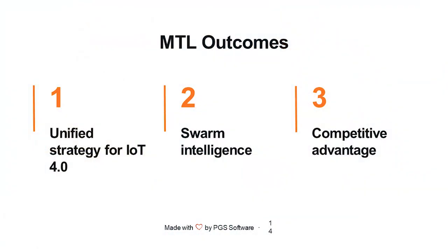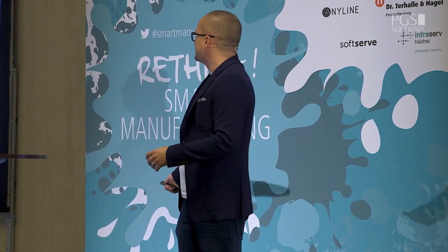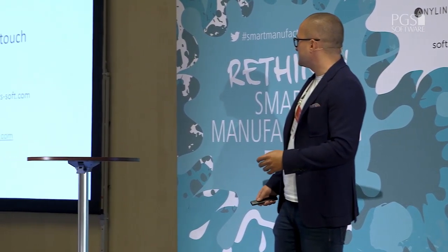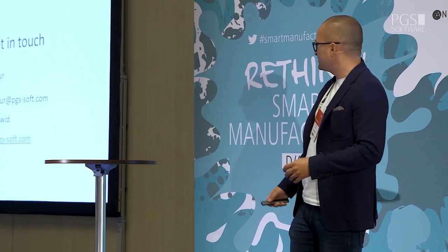To finish up: the outcomes of MTL are a unified strategy for Industry 4.0 and how to go to Level 4 in detail. You get swarm intelligence — all of your assets working together for the benefit of the company, not against each other. And you get a competitive advantage because it is quite fresh and new, and there are not many companies that have been doing it for 10 years already. Let's get in touch later if you are interested in the concept. Thank you.